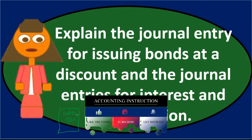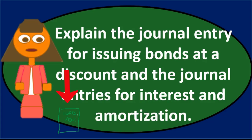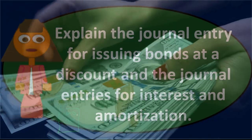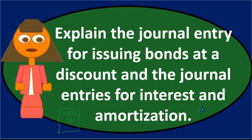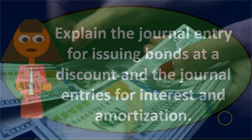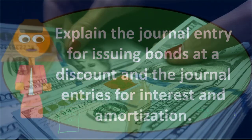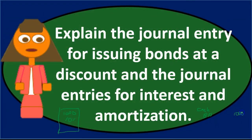What's the journal entry when we first issue the bond? Remember, the purpose of issuing the bond for the company is to get money, so cash is going to be affected — cash goes up when we issue the bond. We'll also have bond payable, similar to loan payable, because we owe it back in the future. We know that amount: it's the one thousand dollars — the face amount on the bond.